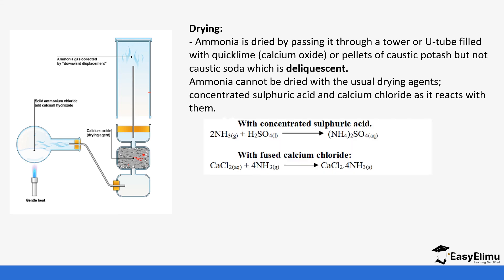Ammonia cannot be dried with the usual drying agents like concentrated sulfuric acid or anhydrous calcium chloride because it reacts with them. For example, ammonia reacts with sulfuric acid to form ammonium sulfate, and it reacts with calcium chloride to form a complex called calcium chloride ammonia. That is why we do not use these normal agents — the unique drying agent we use is calcium oxide.